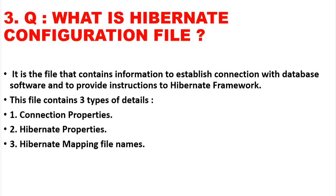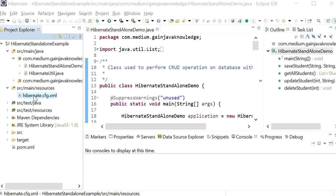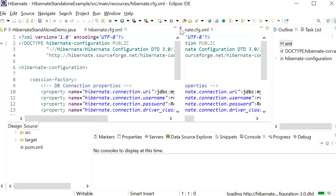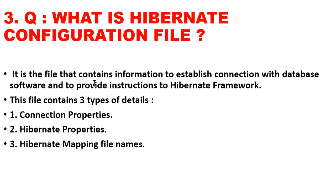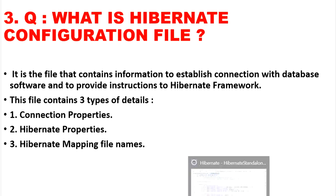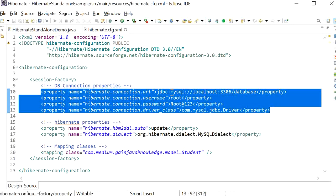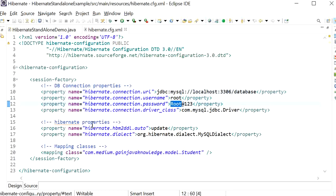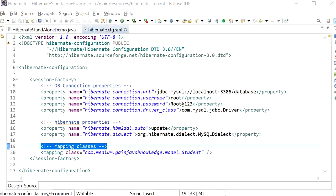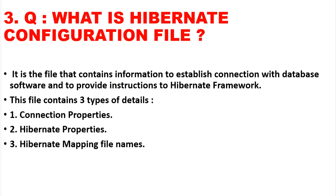The next question is: what is the Hibernate configuration file? It is a file that contains information to establish a connection with the database software and to provide instructions to the Hibernate framework. The Hibernate configuration file contains three things: database connection properties such as connection URL, username, and password; Hibernate properties; and Hibernate mapping file names or mapping classes.